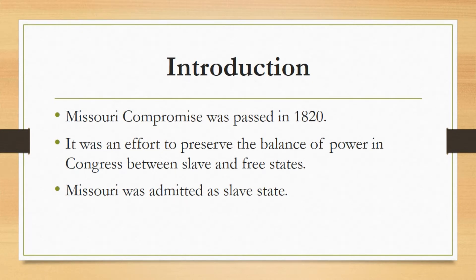In an effort to preserve the balance of power in Congress between slave and free states, the Missouri Compromise was passed in 1820, admitting Missouri as a slave state and Maine as a free state. Furthermore, with the exception of Missouri, this law prohibited slavery in the Louisiana territory.